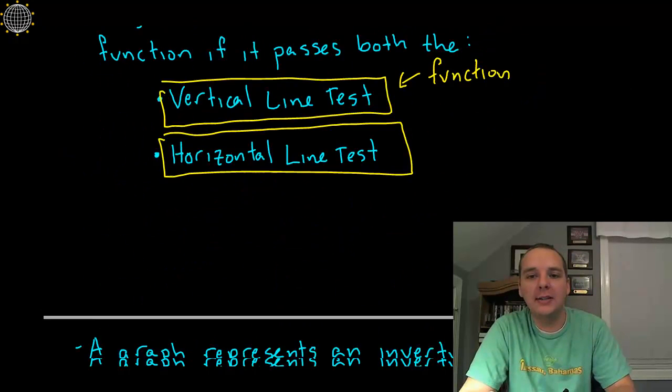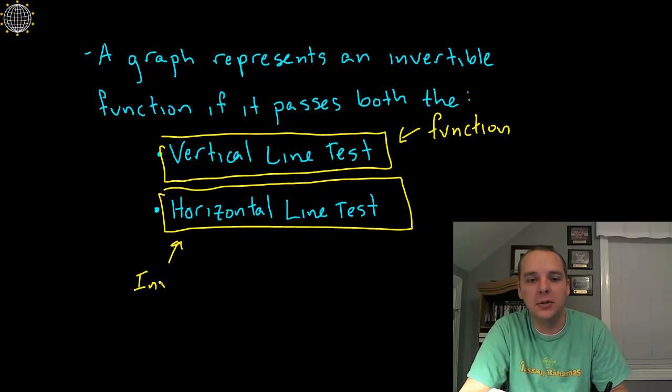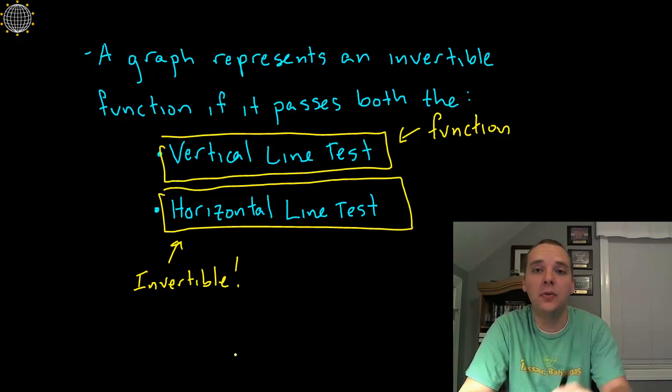So it has to pass both the vertical line test, and the horizontal line test, and again the horizontal line test was to make sure that it was invertible, an invertible function.